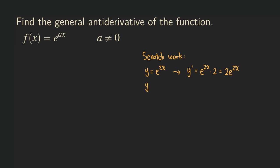Let's try another one. Let's pick e to the 5x. Then y prime equals e to the 5x times 5 — that's the derivative of 5x — giving us 5 times e to the 5x. Those two expressions are really just the same; I'm just moving the 5 to the front so it looks better.